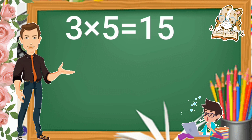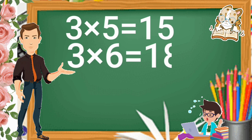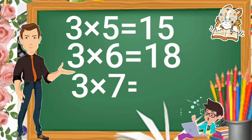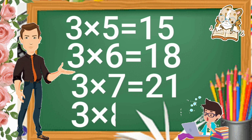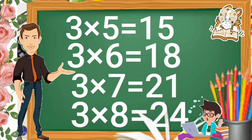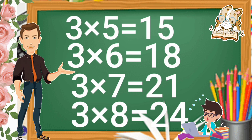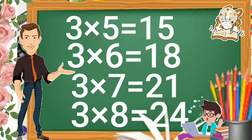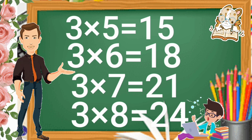3 times 5 is 15. 3 times 6 is 18. 3 times 7 is 21. 3 times 8 is 24.